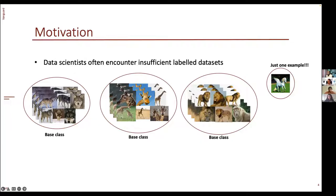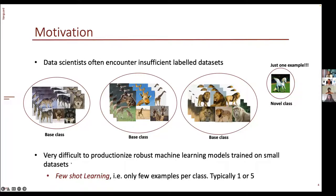Throughout this presentation, we'll call all the classes which have a lot of examples 'base classes', and the class which doesn't have many examples a 'novel class'. Novel classes typically have only one or five examples per class — that's how these algorithms are benchmarked. It is very difficult to productionize robust machine learning models trained on just one or very few examples. This active area of research is called few-shot learning — learning from very few examples per class, typically one or five.